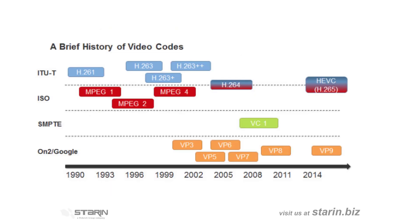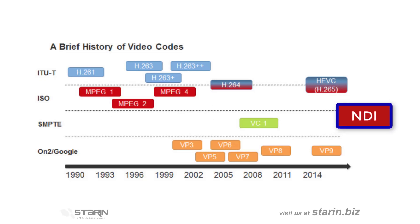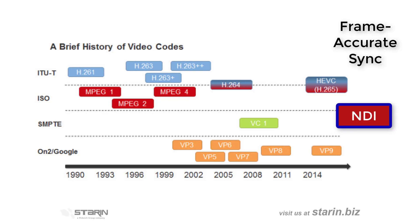Additionally, NDI provides a very efficient codec so that we can be assured of frame-accurate sync. This is huge when we're dealing with production switching applications and is one thing that's been missing in IP streaming in the past.